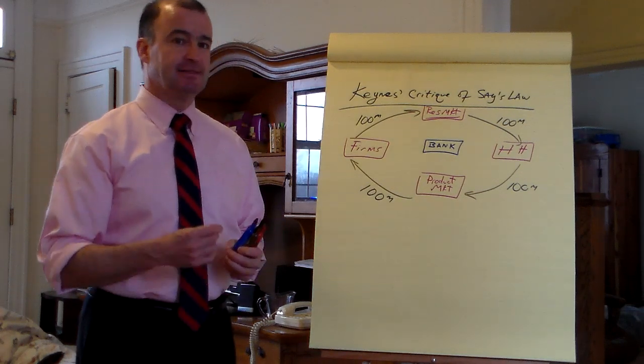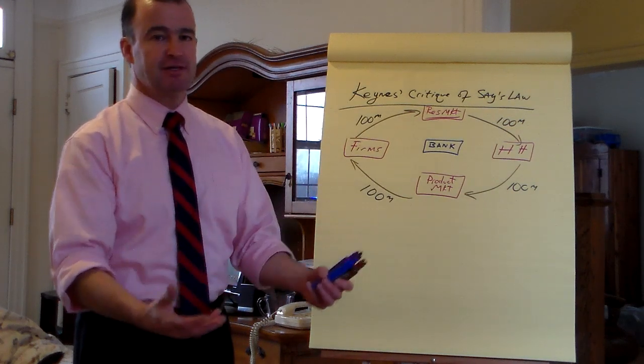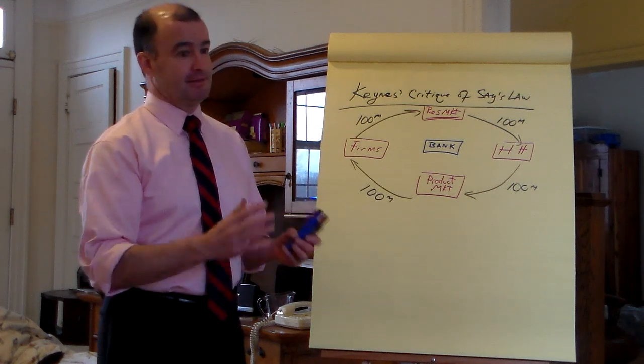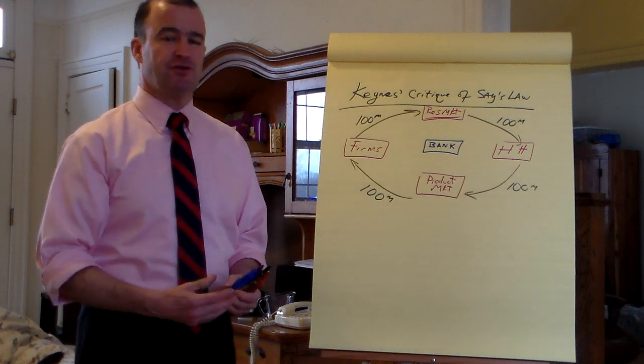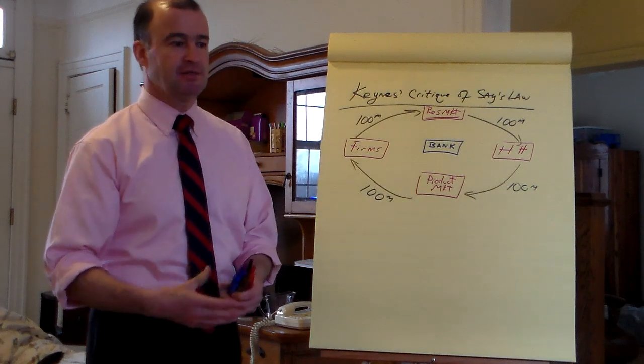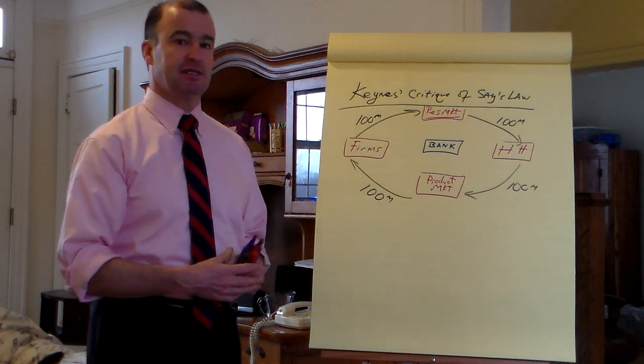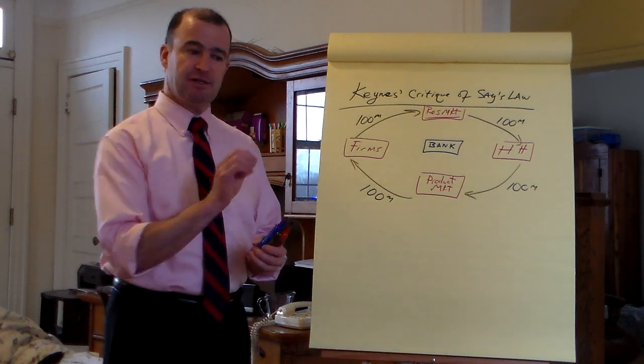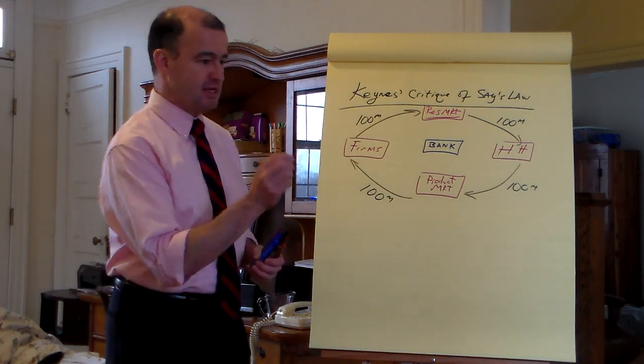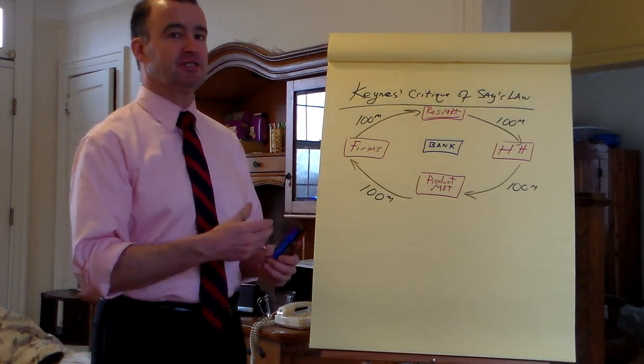Say's Law is the idea that supply creates its own demand. Any new output automatically creates enough income to purchase all the output. That much is true. It requires further that new saving creates new investment. Because if people don't spend, it would seem as though there's a shortfall in demand for products in general.